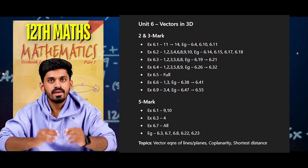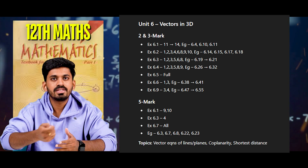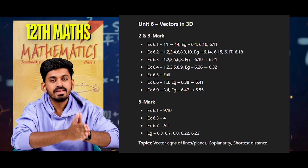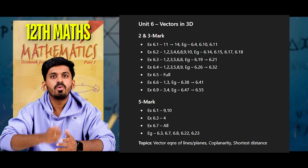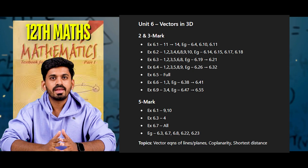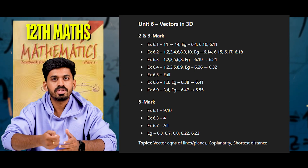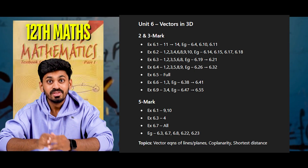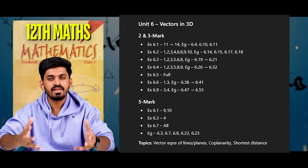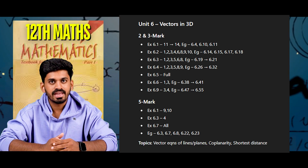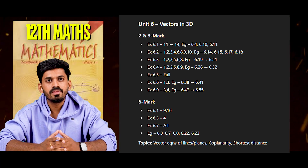Unit 6, 2-mark and 3-mark questions: Exercise 6.1 law 11 to 14. Examples 6.4, 6.10, 6.11. Exercise 6.2 law 1, 2, 3, 4, 6, 8, 9, 10. Examples 6.14, 6.15, 6.17, 6.18. Exercise 6.3 law 1, 2, 3, 5, 6, 8. Examples 6.19, 6.20, 6.21. Exercise 6.4 law 1, 2, 3, 5, 8, 9. Examples 6.26, 6.27, 6.28, 6.30, 6.32. Exercise 6.5 law 11 to 14. Exercise 6.6 law 1, 3. Examples 6.38, 6.39, 6.40, 6.41. Exercise 6.9 law 3, 4. Examples 6.47, 6.48, 6.49, 6.51, 6.52, 6.55.